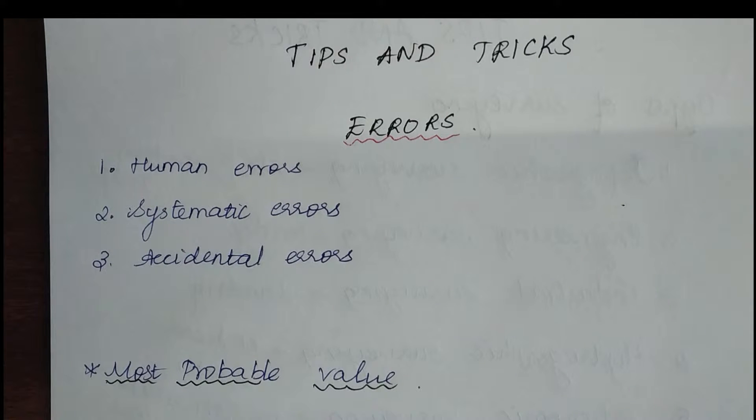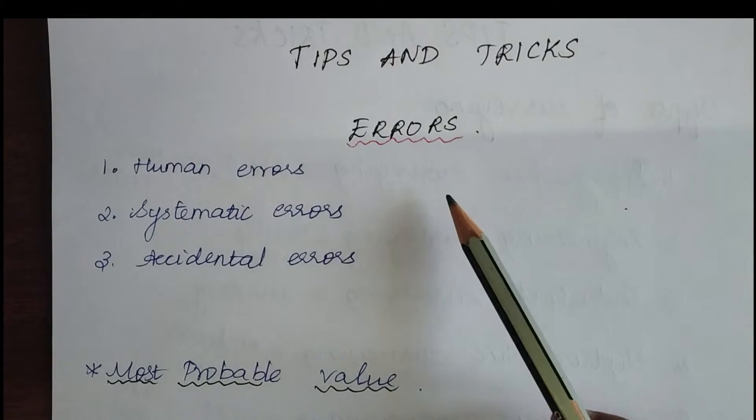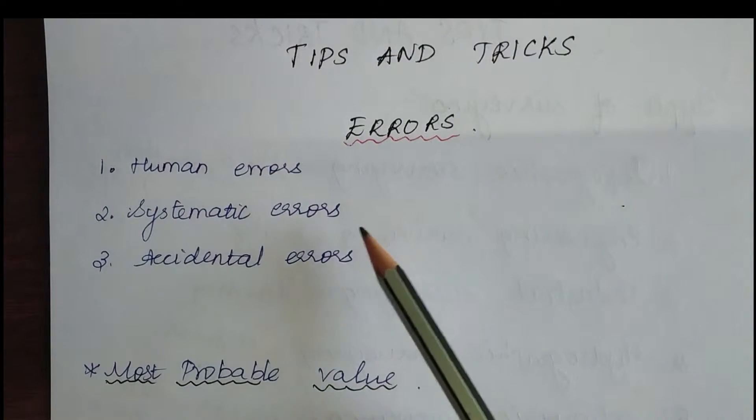Hello everyone, welcome to tips and tricks. Today we are going to see the types of errors and their adjustments. There are three main errors: human error, systematic error, and accidental error.